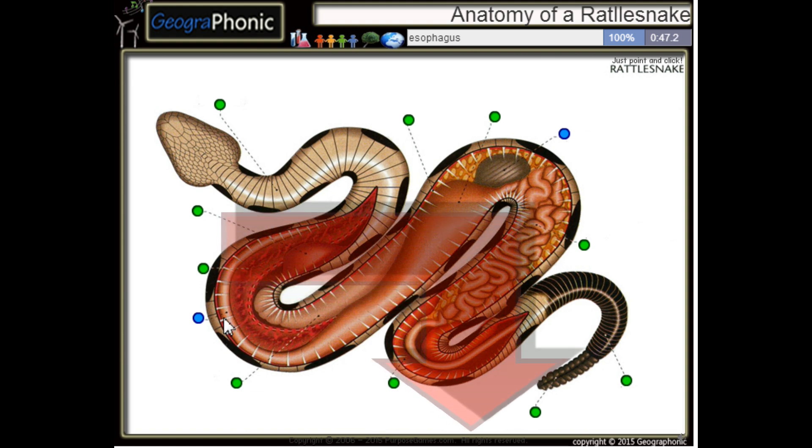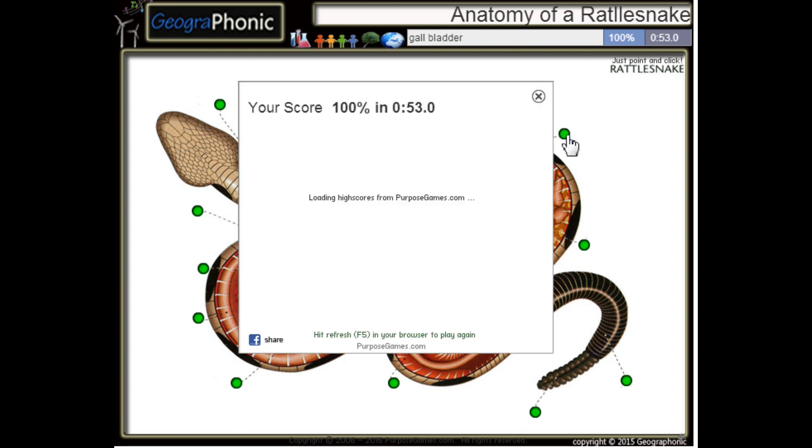This is the kidney of the snake. This is the esophagus. And this is the gallbladder.